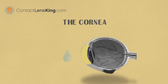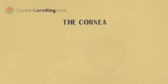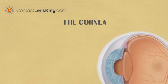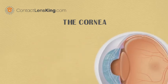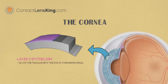but instead receives nourishment from tears and the aqueous humor. Although the cornea is a clear structure, it is a highly organized tissue containing five important layers. The first layer is the epithelium, which is the cornea's outermost layer. Its primary functions are to block the passage into the eye of foreign material such as dust, water, and bacteria,